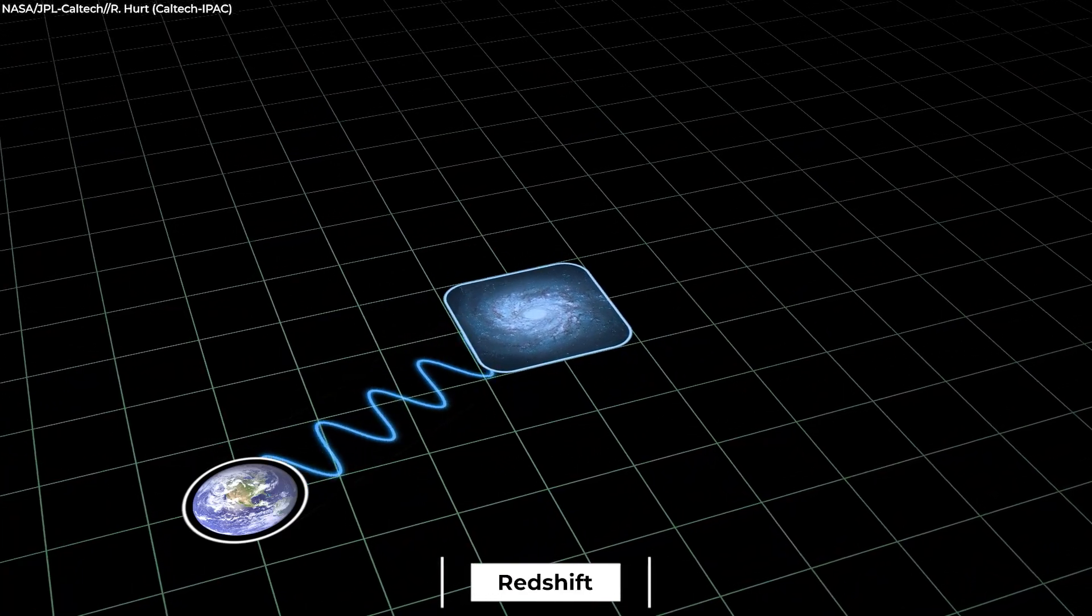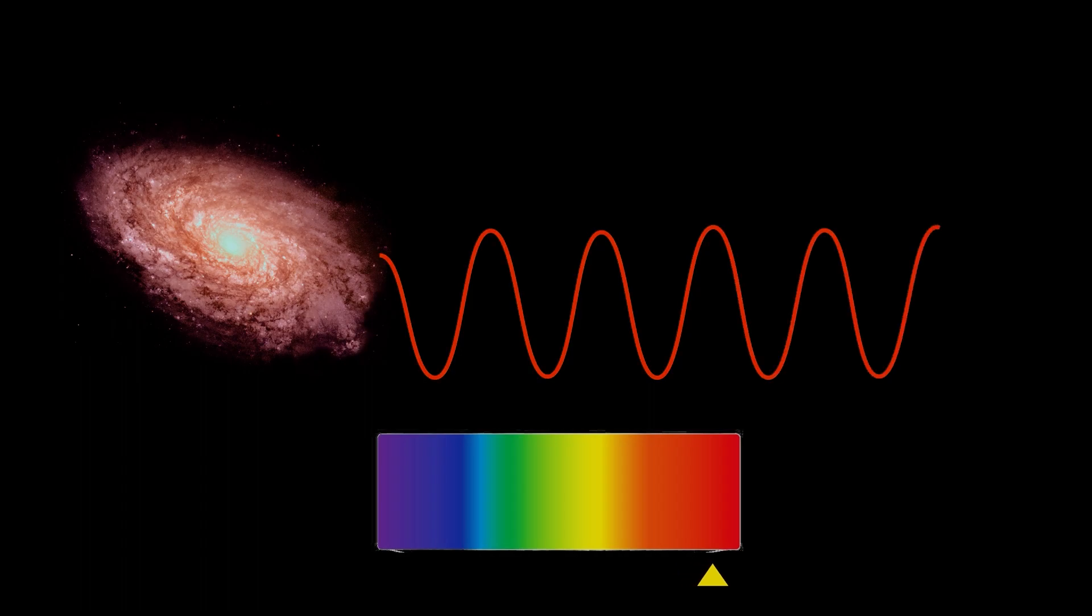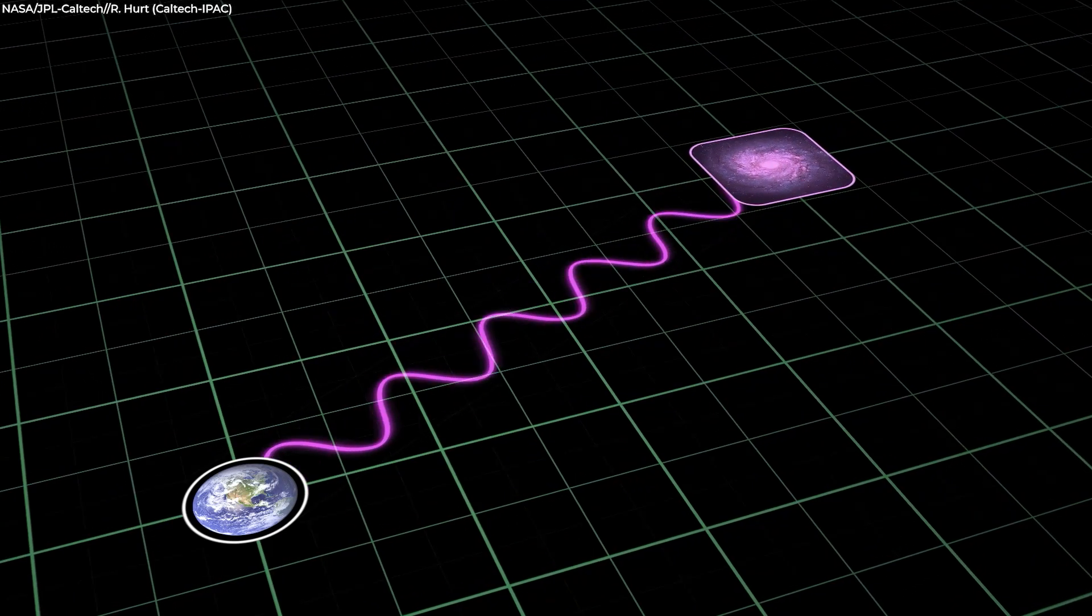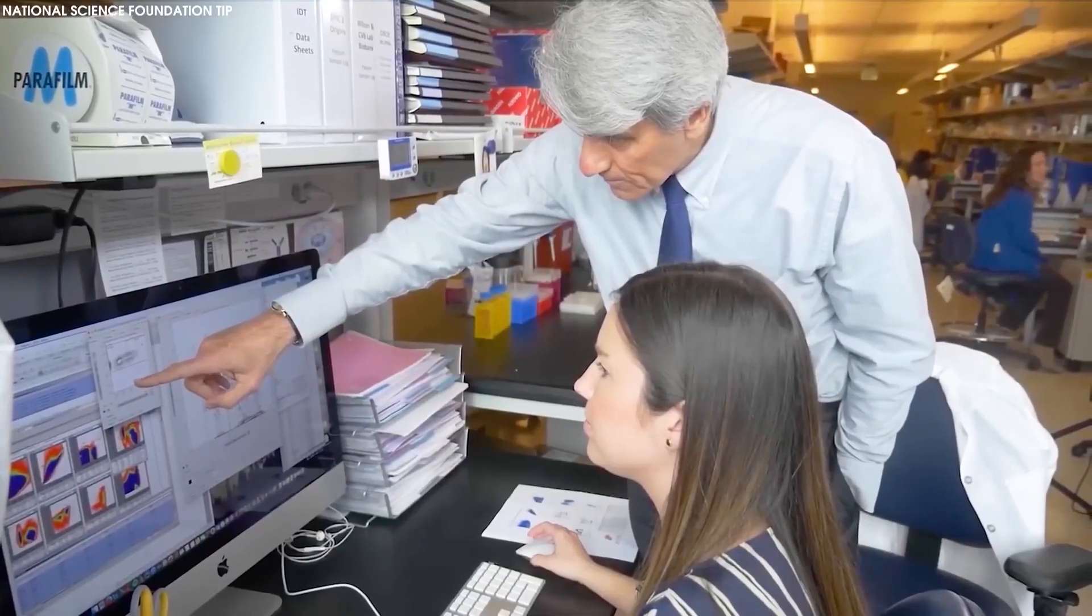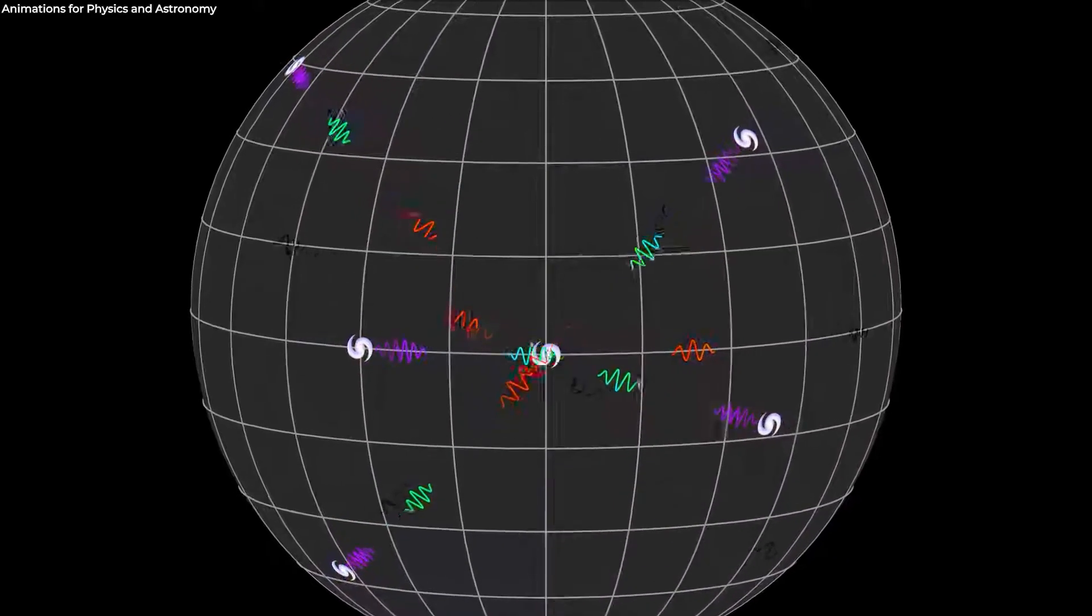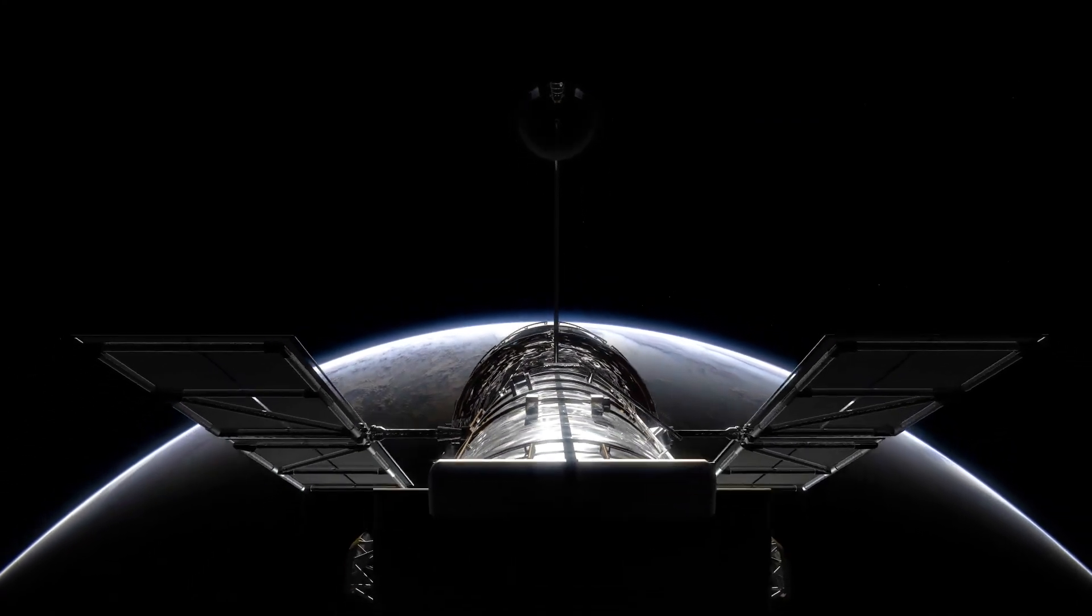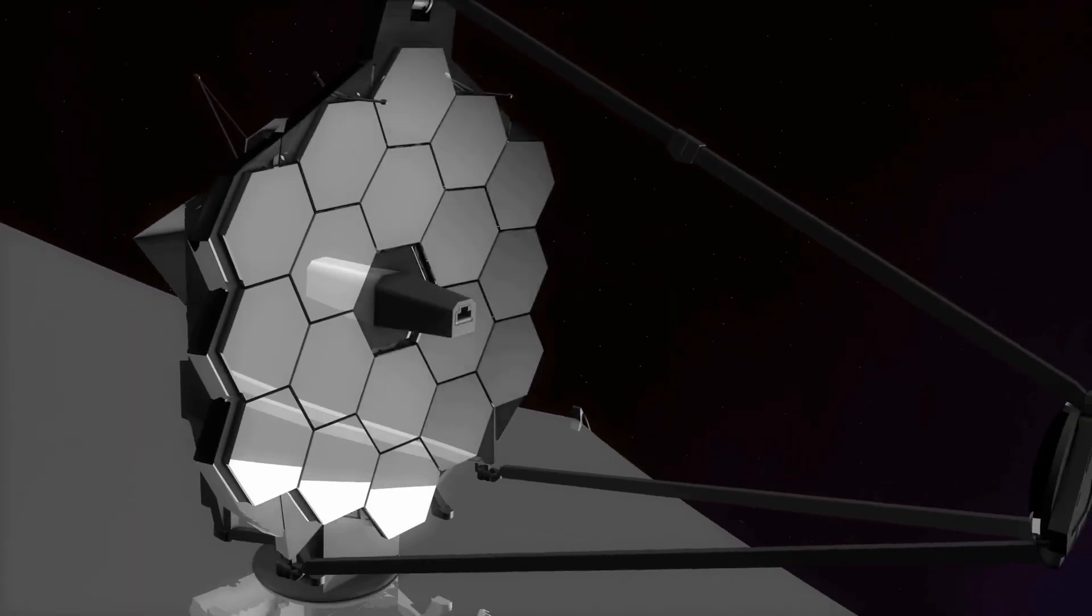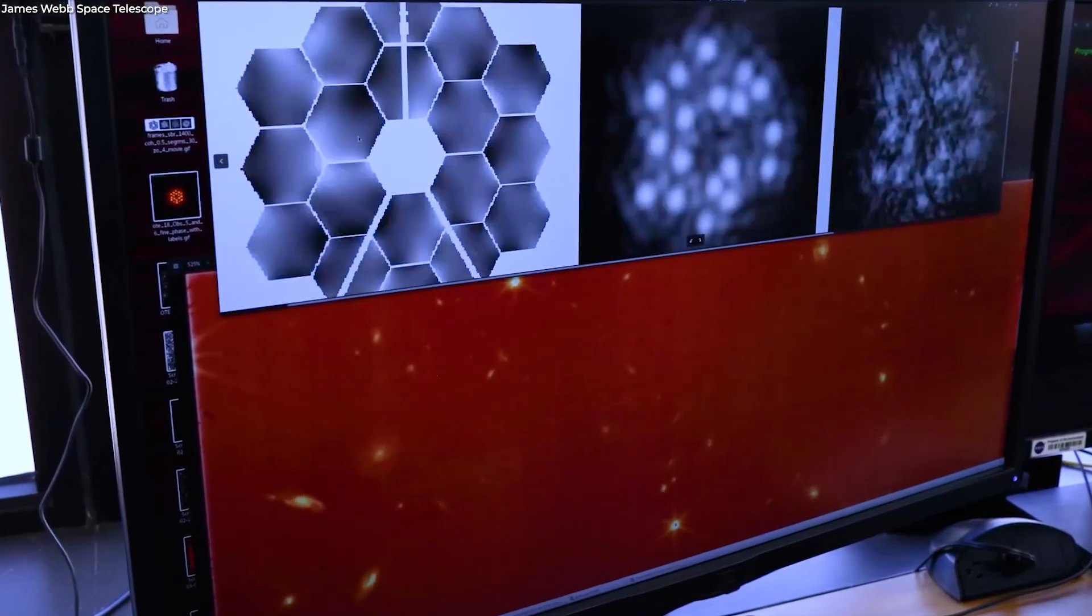Redshift is the term for the process whereby galaxies' light is shifted towards the red end of the spectrum as they migrate farther and farther away from us as a result of the universe's expansion. The light from the extremely distant galaxies that early universe researchers are interested in has been redshifted so far that it can only be seen in the infrared. As a result, Hubble's instruments had to work extremely hard to find even a few of these galaxies, whereas Webb found many of them within a few days of the telescope beginning its science operations.